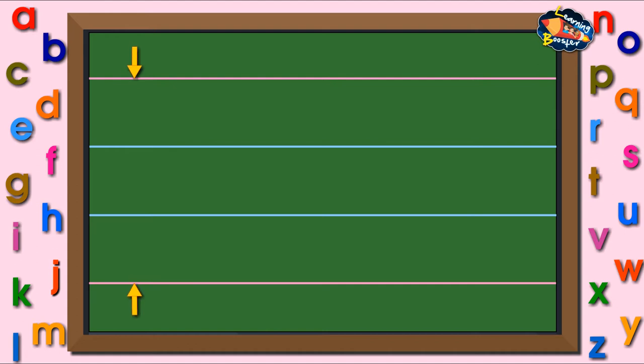Look at the two red and two blue lines. Each has a name: tall line, base line, base line, and tail line.